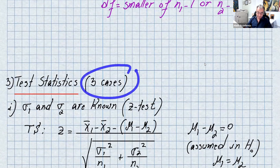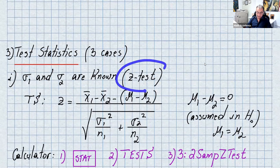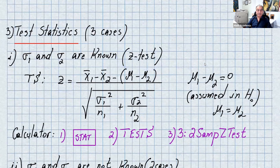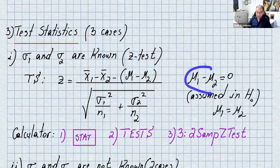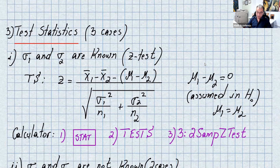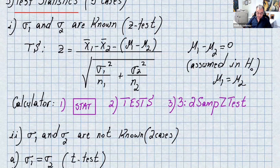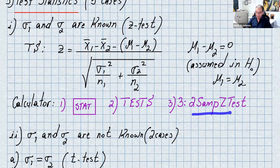Test statistics — we have three cases matching the critical values. If sigma1 and sigma2 are known, it's a z-test. The formula is z equals (x̄1 minus x̄2) minus (mu1 minus mu2), all over the square root of sigma1 squared over n1 plus sigma2 squared over n2. The (mu1 minus mu2) term is always 0, because in H0 we assume mu1 equals mu2. With the calculator, go to STAT, highlight TEST, and go to number 3, which is two-sample z-test.